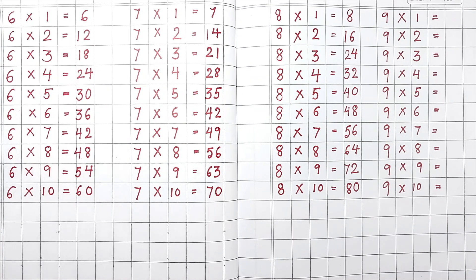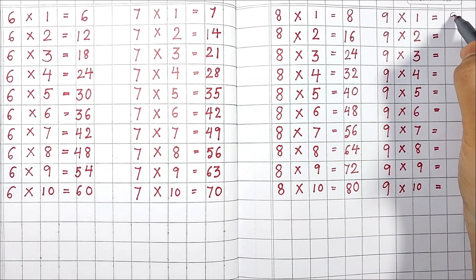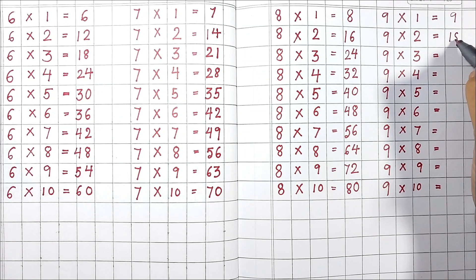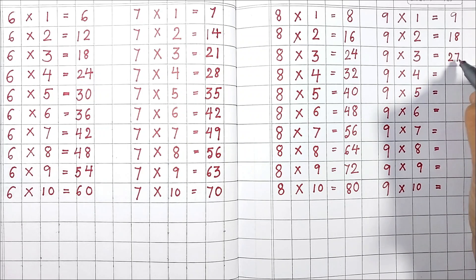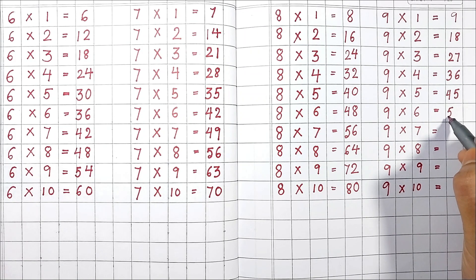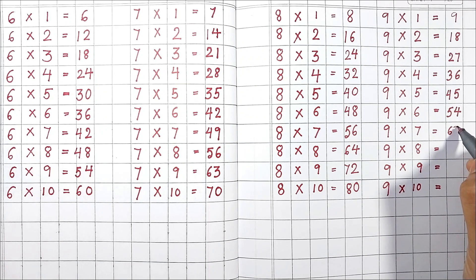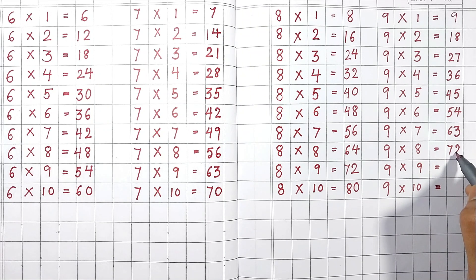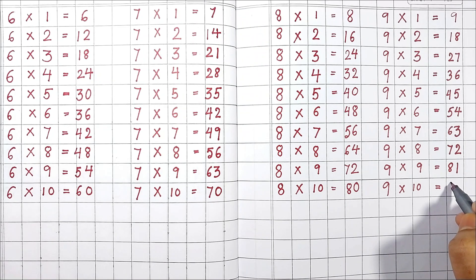Table of 9. 9 1's are 9. 9 2's are 18. 9 3's are 27. 9 4's are 36. 9 5's are 45. 9 6's are 54. 9 7's are 63. 9 8's are 72. 9 9's are 81. 9 10's are 90.